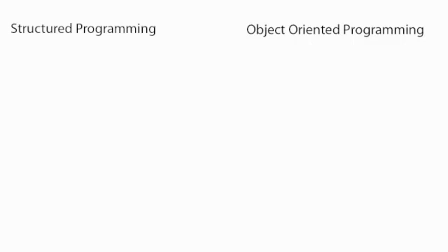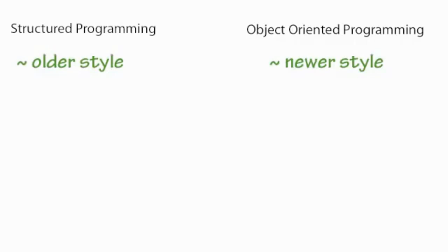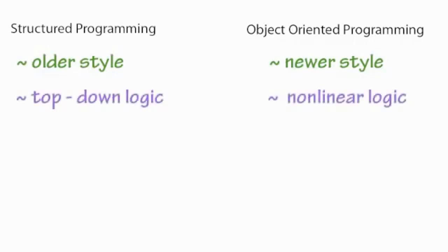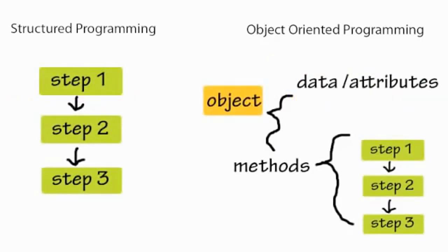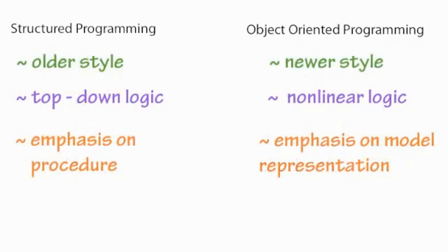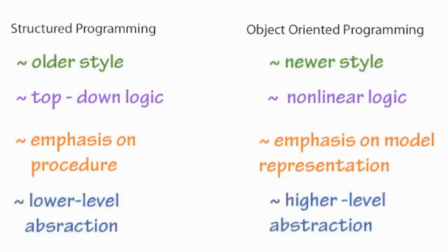The difference between structured programming and object-oriented programming is that structured programming is older and more top-down logic, rather than non-linear. In object-oriented programming, you can have function calls and the logic can go all over the place instead of just going from top to bottom. Structured programming is more concerned with procedure, while object-oriented programming is more concerned with representing models or objects. Structured programming is closer to assembly language and therefore lower in abstraction than object-oriented programming.